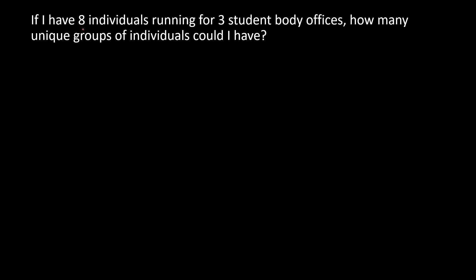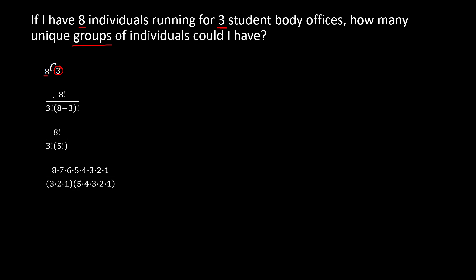Here's another example: eight individuals are running for three student body offices, and the question is how many unique groups of individuals could we have? We see the keyword 'groups,' so it's going to be a combination. We have eight people choosing three at a time, so we set this up as 8C3. Mathematically, this is 8 factorial divided by 8 minus 3 factorial times 3 factorial, giving 8 factorial over 3 factorial times 5 factorial. The 5 factorial cancels top and bottom, 3 times 2 is 6 cancels with 6 in the numerator, leaving 8 times 7, which is 56.